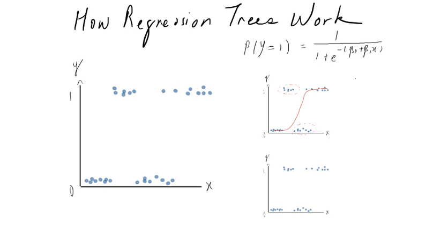So let's see how the regression tree helps solve this problem. In this case, the regression tree first finds a partition of the data — the partition appears to be somewhere around here intuitively. Once the data have been partitioned, the fitting of the logistic curve is done separately for each partition. For example, over here the model would look something like this, whereas for the data in this partition the model would look something like that.